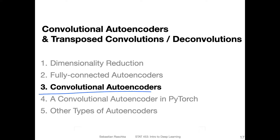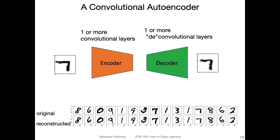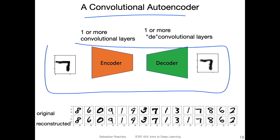Let's talk about convolutional autoencoders. Along with this topic, we will also talk about transposed convolutions and deconvolutions, which are also sometimes called strided convolutions, and I will also tell you why we need them. Here's an overview of how a convolutional autoencoder looks like. It looks exactly like what you've seen for the fully connected autoencoder. The only difference is that instead of using fully connected layers, we are using convolutional layers for the encoder, and for the decoder, we are using the so-called deconvolution layers or strided convolutions.